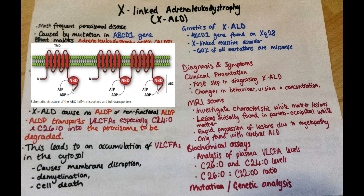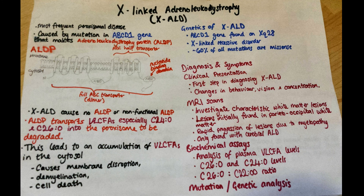ALDP is needed to make a heterodimer of the ABC binding cassette protein, which transports very long-chain fatty acids through the peroxisomal membrane from the cytosol. XALD causes ALDP to form no protein or a homodimer protein, which is unable to transport very long-chain fatty acids into the peroxisomes where they can be degraded. This causes the characteristic accumulation of very long-chain fatty acids in the cell, especially C24 and C26 saturated fatty acids.